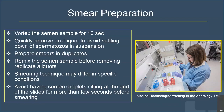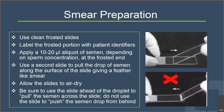Smear preparation is done by feathering technique using clean frosted slides labeled with patient identifiers. Apply a 10-microliter droplet, or 20 microliters if the sample is more concentrated. The second slide on top is used to pull the drop along the surface of the slide, obtaining a uniform feather-like thin smear. The wrong technique is to push the droplet — it is always a pull-through technique done at an angle of 45 degrees within a second.